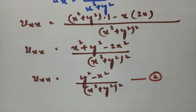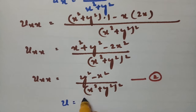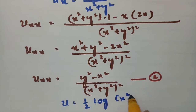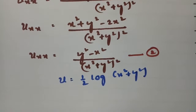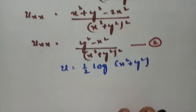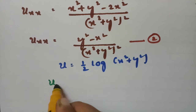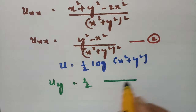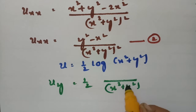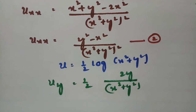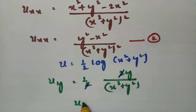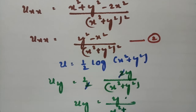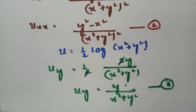Returning to u = ½ log(x²+y²), I now take the derivative with respect to y. The derivative of log(x²+y²) with respect to y is 1/(x²+y²) times 2y. Cancelling the 2, uy = ∂u/∂y = y/(x²+y²). This is equation number 3.